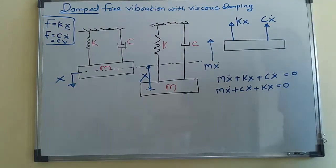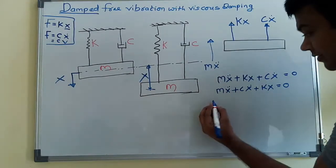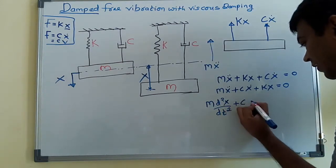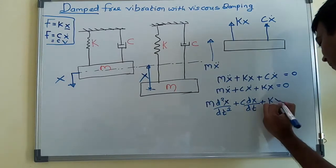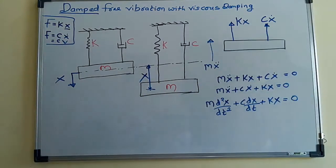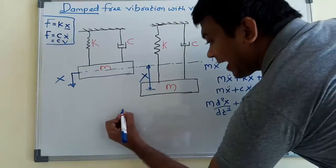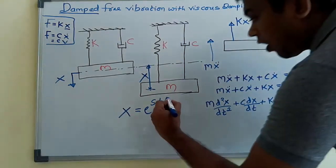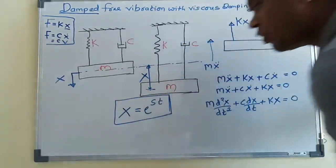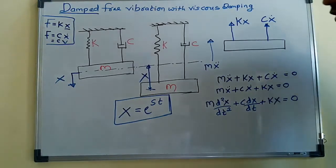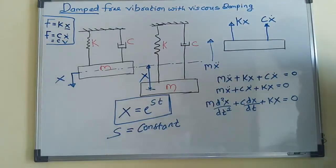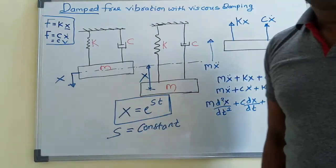Rearranging, we get m·X-double-dot + C·X-dot + K·X = 0. This is a second-order differential equation: m·(d²x/dt²) + C·(dx/dt) + K·X = 0. As you have already studied in mathematics, for a second-order differential equation the solution is given as X equals e raised to the power s·t, where s is a constant. We are interested in determining the value of this constant s.